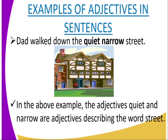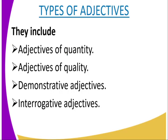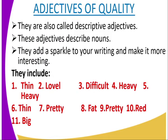'Dad walked down the quiet, narrow street.' Here, 'quiet' and 'narrow' are adjectives describing the noun 'street.' There are different types of adjectives: adjectives of quality, adjectives of quantity, demonstrative adjectives, and interrogative adjectives. We begin with adjectives of quality, also called descriptive adjectives — they describe nouns and make writing more interesting.